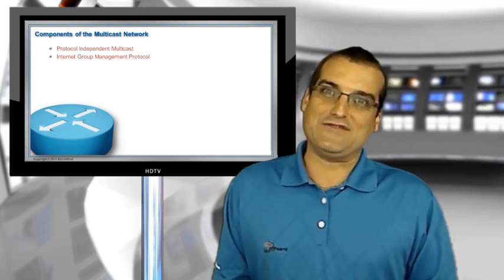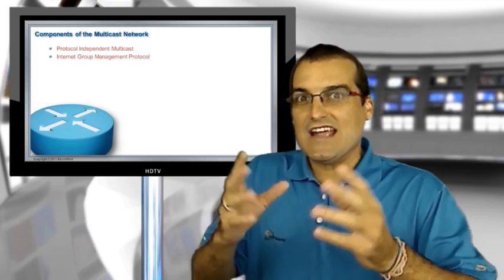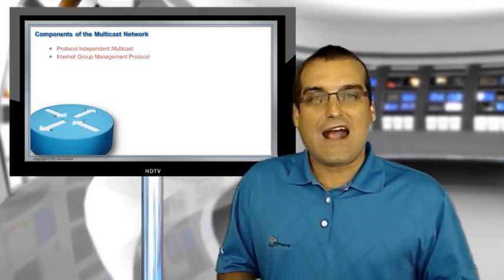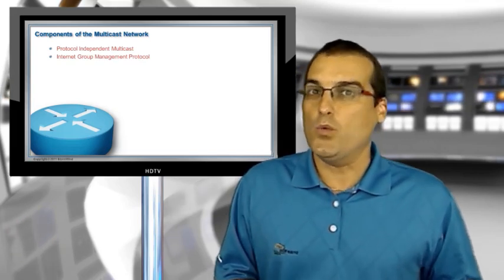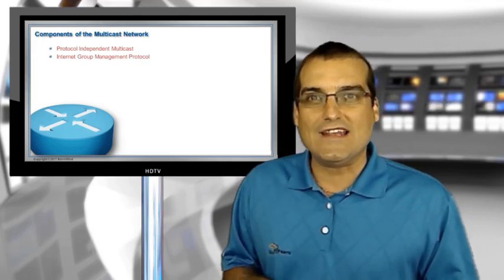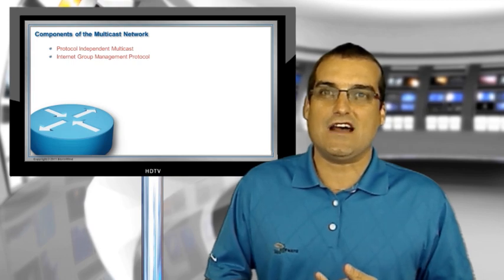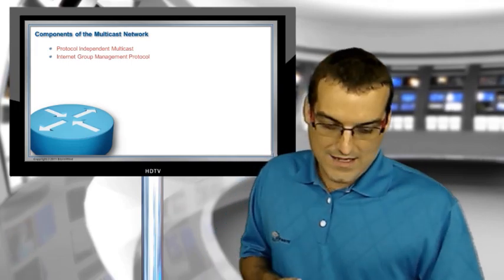So these are the big players, folks. We've got our source sending the multicast feed. We've got clients that want to receive it. We've got routers in the middle and they're running a multicast routing protocol. We'll focus on protocol independent multicast. And then we've got clients that want to receive all this great stuff. And they're using internet group management protocol, IGMP, most likely in order to signal that they want to receive the feed.